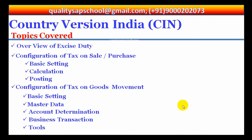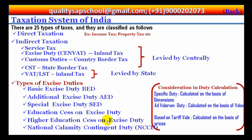Before going to learn about the settings, we are going to learn about the Indian taxation system. The taxes in India are levied by the central government and state governments. Some minor taxes are also levied by local authorities such as municipalities. The authority to levy a tax is derived from the Constitution of India, which allocates the power to levy various taxes between the central and the state. A key restriction on this power is Article 265 of the Constitution, which states that no tax shall be levied or collected except by the authority of law. Therefore, each tax levied or collected has to be backed by an accompanying law.